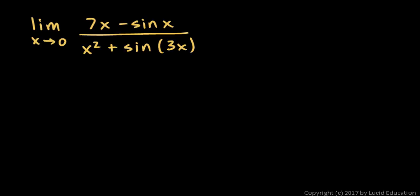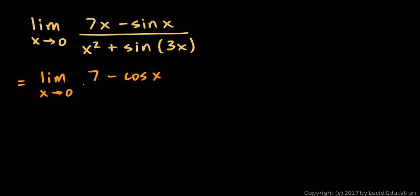In this one we have the limit as x approaches 0 of 7x minus sine x over x squared plus sine 3x. At 0, this gives us 0 minus 0 over 0 plus 0, so let's try L'Hôpital's rule. The limit as x approaches 0 of the derivative of the numerator will be 7 minus cosine x, over the derivative of x squared, which is 2x, plus the derivative of sine 3x, which is 3 cosine 3x.